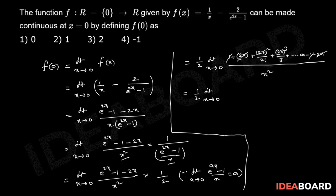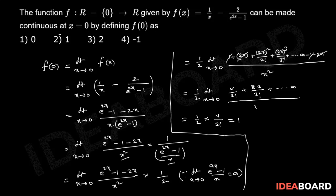Taking x² as common factor from the numerator, and cancelling with the x² in the denominator, we get 1/2 into (4/2! + 8x/3! + ...). As x tends to 0, this equals 1/2 into 4/2 = 1. So the correct answer is 1, which is the second option.